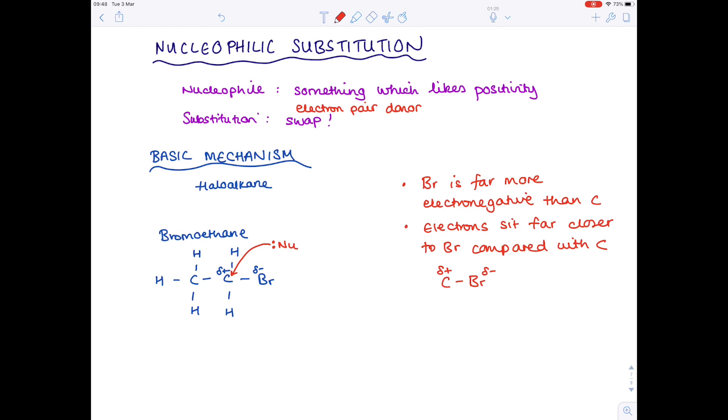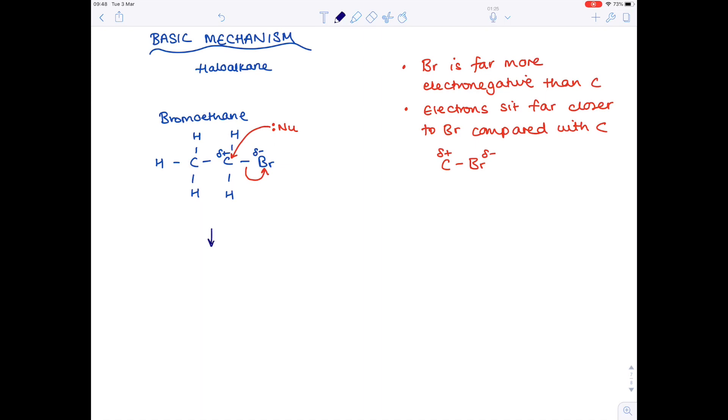And then almost at the same time, you find that there's a second movement of electrons, and that's from the carbon bromine bond to the bromine. So there's our second important curly arrow. So if we look at the actual product produced, we know the nucleophile will now be attached. And because that nucleophile has swapped places with the bromine, we can say that a substitution reaction has taken place.